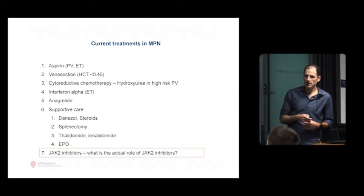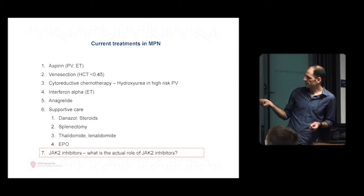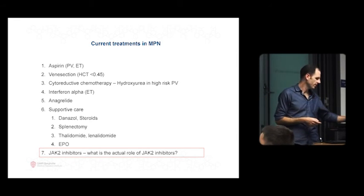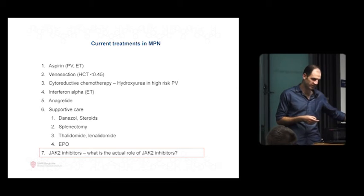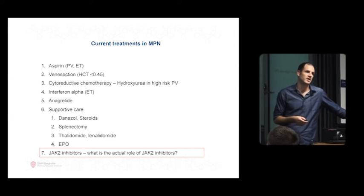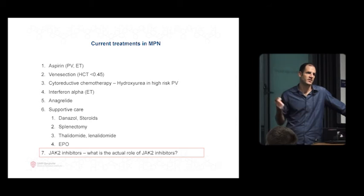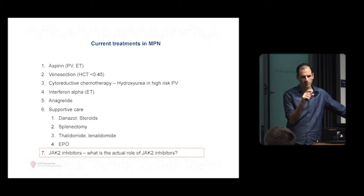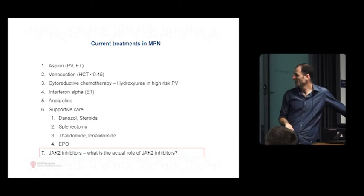I thought maybe what I'd just do is go back to the start and say, why do we do all these things - aspirin, venesection, hydroxyurea? When you come in with a myeloproliferative neoplasm, the first thing we always do is put people on aspirin, we take blood off if they've got high blood counts, and often if people are high risk, we put people on hydroxyurea. A lot of people don't really know why we do that, it's just something we've always done.